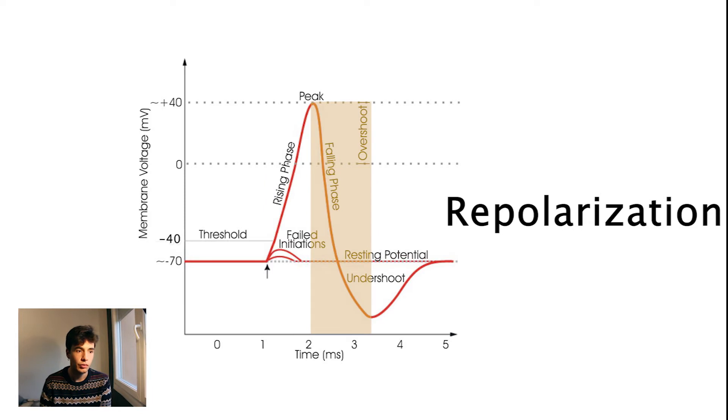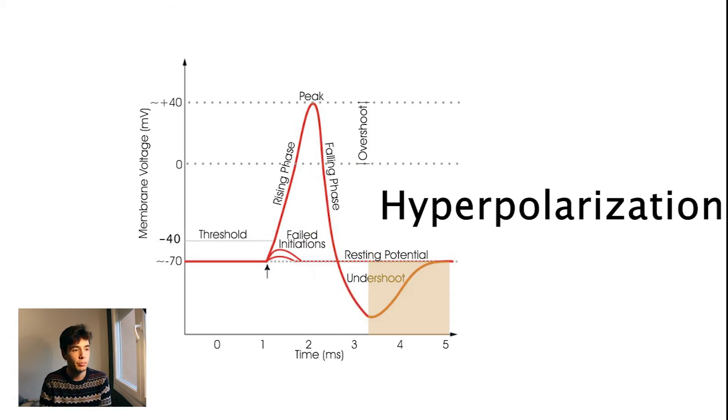The repolarization: the voltage starts decreasing and comes back to its resting state, in particular a bit less of minus 70 millivolts. And finally the hyperpolarization, where the voltage finally reaches the minus 70 millivolts, and the neuron is back to the resting potential.